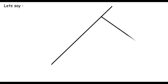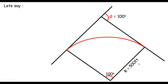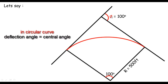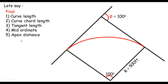Let's say if we consider a horizontal curve like in this form, the deflection angle is 100 degrees and the radius of the curve is 500 feet. Keep in mind the deflection angle of a circular curve and its central angle are always the same. We are asked to find the curve length, the chord length, the tangent length, mid-ordinate, and apex distance. The radius and the deflection angle are just enough to calculate all these five unknown parts of the curve.